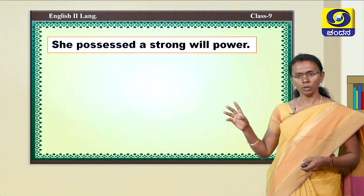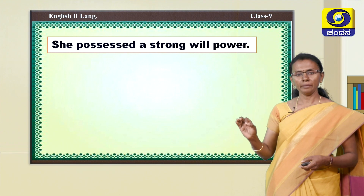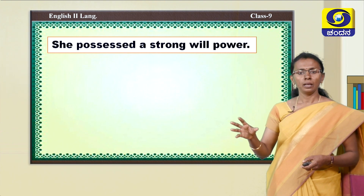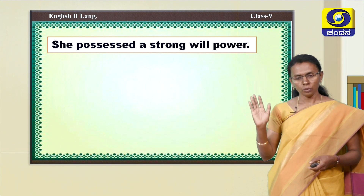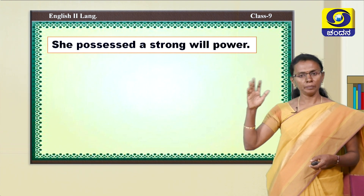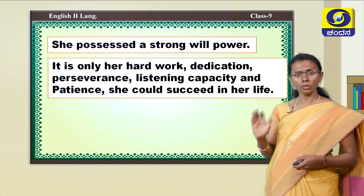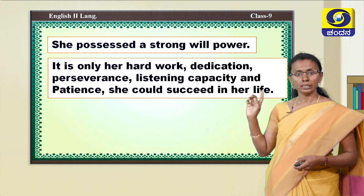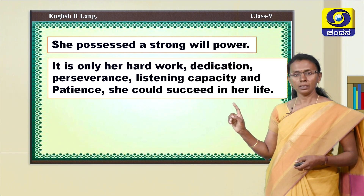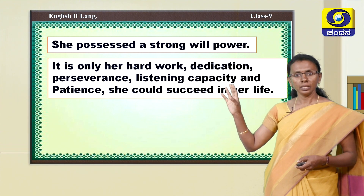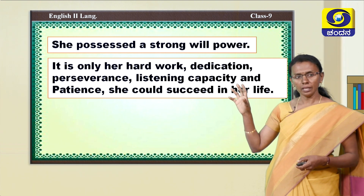She possessed a strong will power — this is very important, not only for Betty but for everyone. When we do not have a strong motive or strong will, we cannot be successful. So when you want to be successful, something good, or something in your academics, you should have a strong will power. It is only her hard work, dedication, perseverance, listening capacity, and patience that helped her succeed in life.